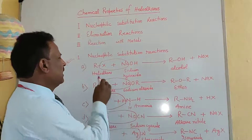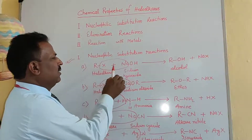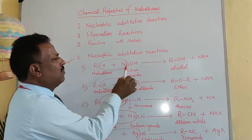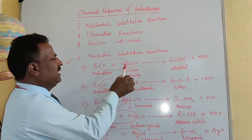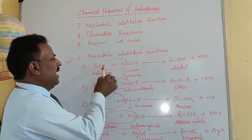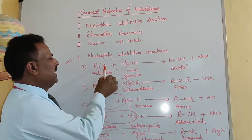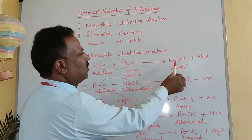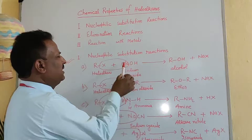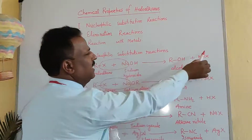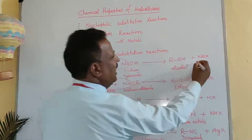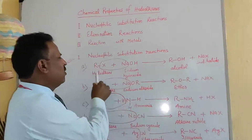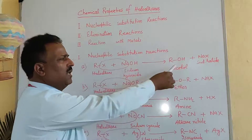Example: Here RX, when it reacts with NaOH. OH is the atom of compound NaOH, and it replaces X, the halogen, which is the atom of compound RX. This gives ROH, which is alcohol, and Na⁺X⁻, which is sodium halide. So from haloalkane you can prepare alcohol.